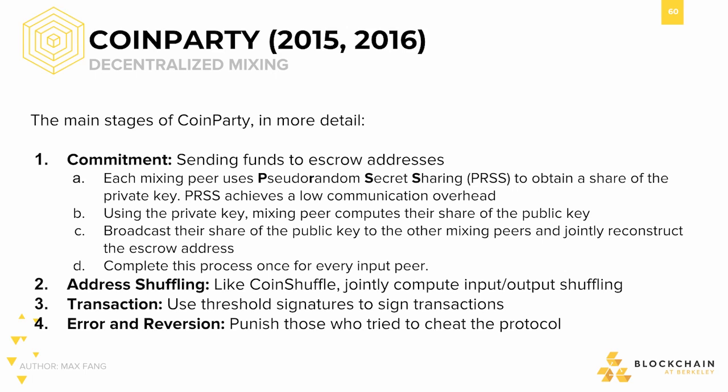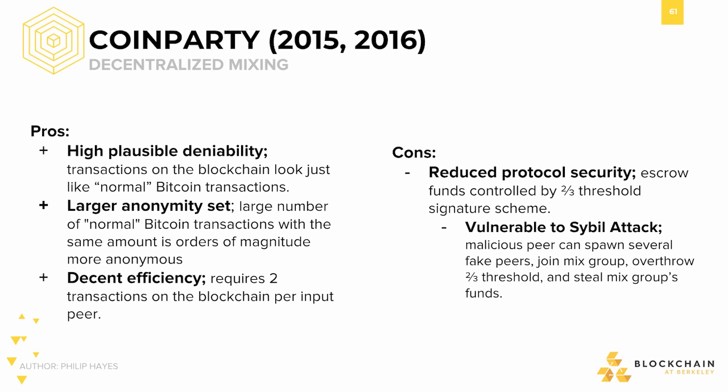This process is then repeated for every peer to generate an escrow address. Address shuffling is similar to CoinJoin and CoinShuffle through secure multi-party computation. The transaction is signed using threshold signatures via the previously generated signatures. If anyone was detected trying to cheat the protocol, they can be punished. The main benefit of CoinParty is high plausible deniability, since CoinParty transactions on the blockchain look just like normal Bitcoin transactions. Additionally, CoinParty has a larger anonymity set, as the largest number of normal Bitcoin transactions with the same amount is orders of magnitude more anonymous. The protocol also has decent efficiency — it requires two transactions on the blockchain per input peer, which is reasonable.